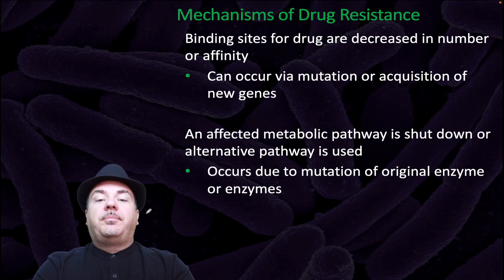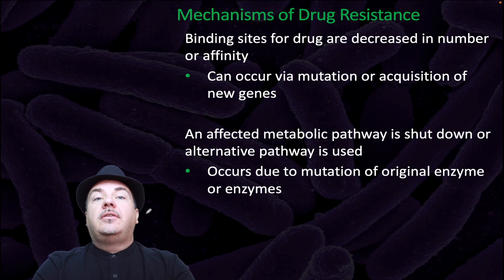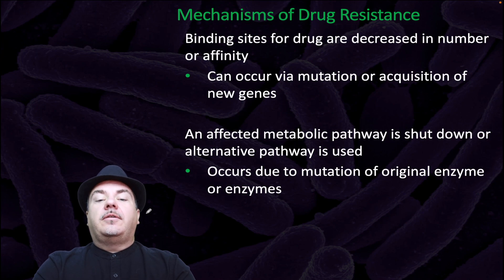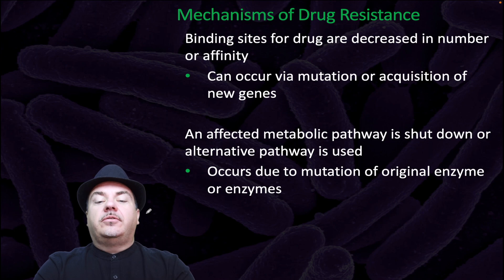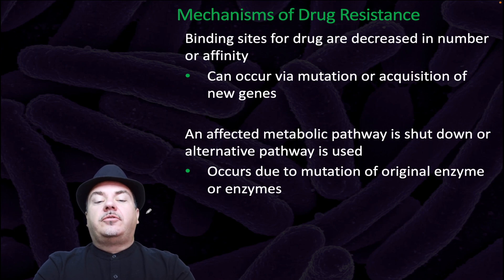Another method is that binding sites for the drug can be decreased in number or affinity. This can occur via mutation or acquisition of new genes. Alternatively, an effective metabolic pathway is shut down or an alternative pathway is used, which occurs due to mutation of the original enzyme or enzymes.